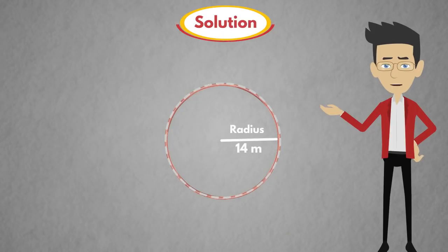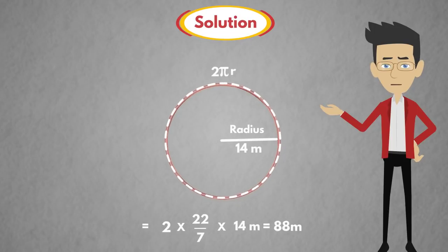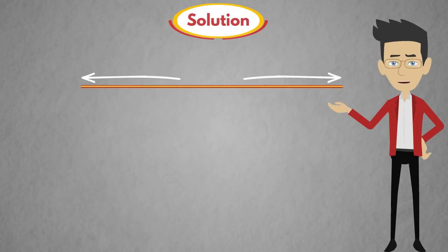Circumference of a circle is equal to 2πr, equal to 2 into π value, that is 22 by 7, into radius r is 14 m. After solving this, we get 88 m. So, length of the wire is 88 m.